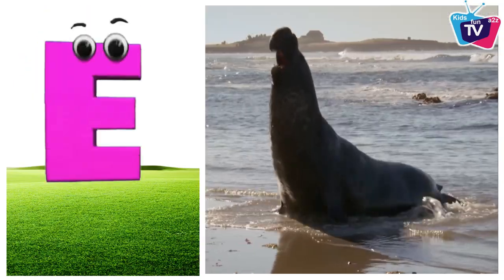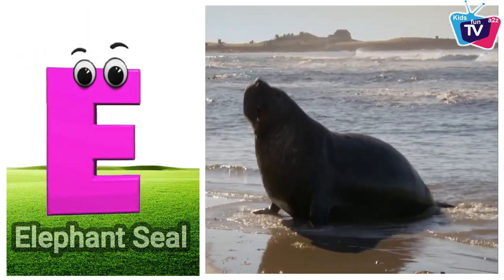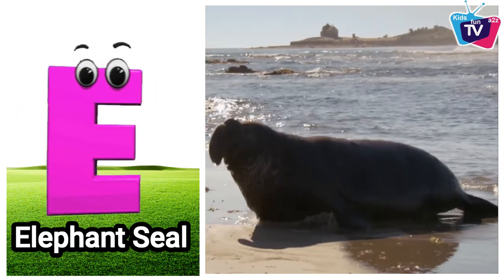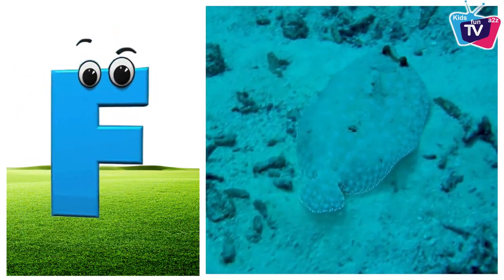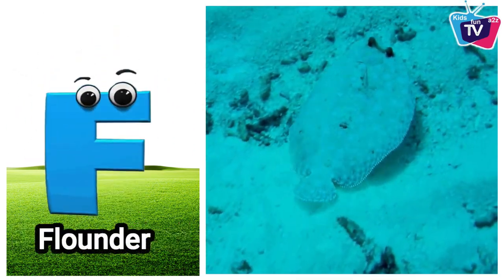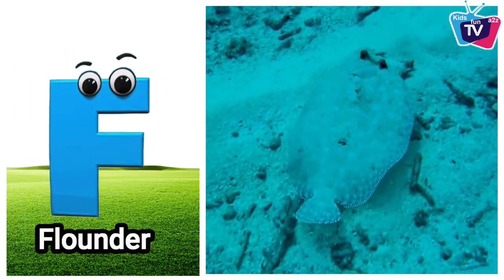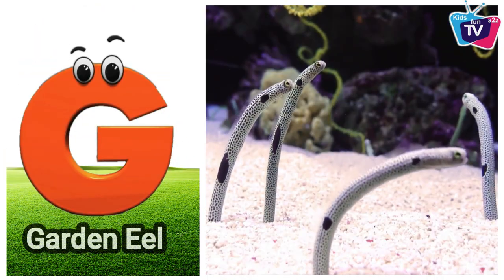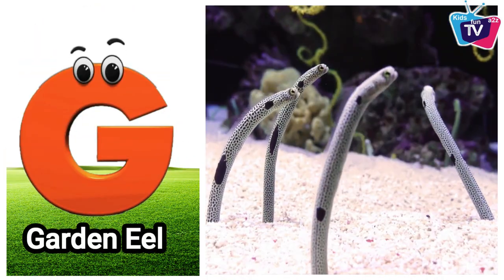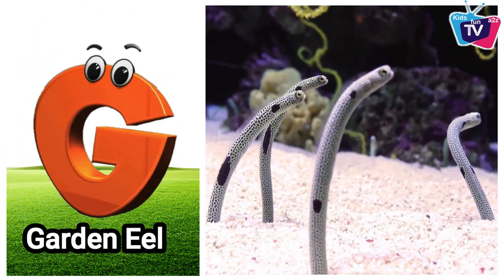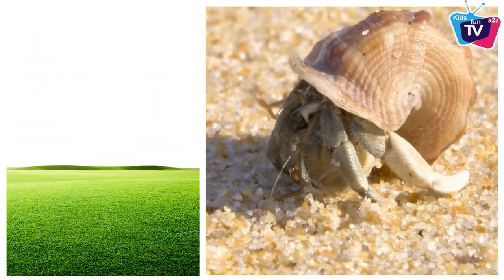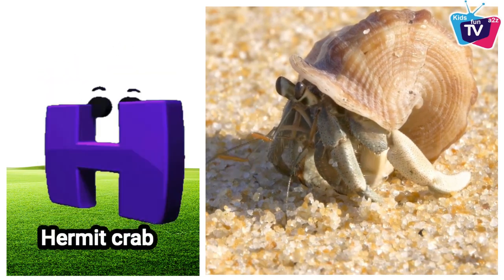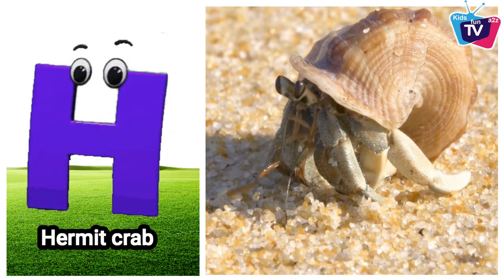E is for Elephant Seal. Elephant Seal. F is for Flounder. Flounder. G is for Garden Eel. Garden Eel. H is for Hermit Crab. Hermit Crab.